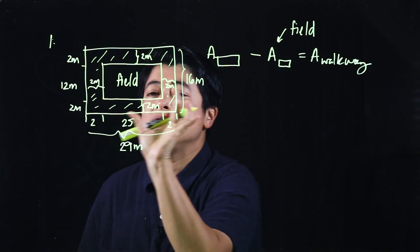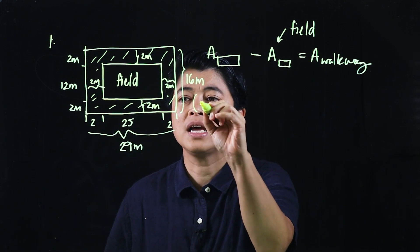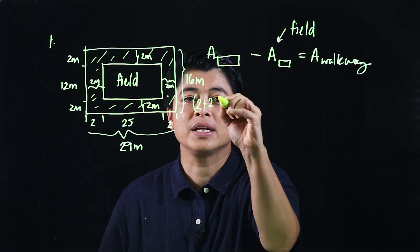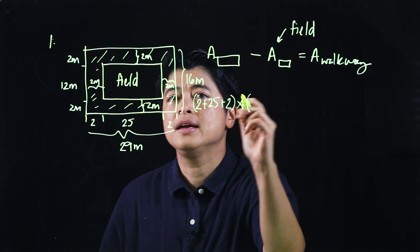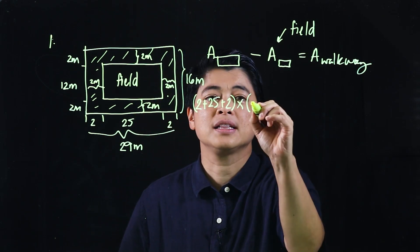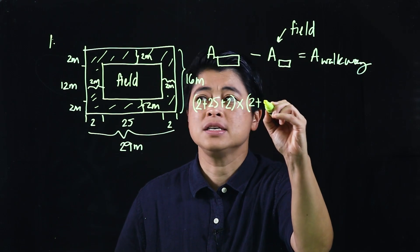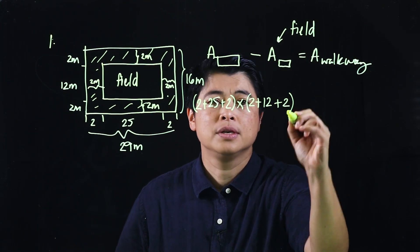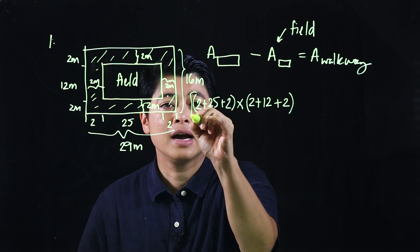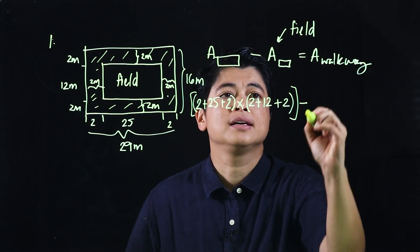The area of this rectangle would technically be the length, which is technically 2 plus 25 plus 2, multiplied by the breadth which is technically 2 plus 12 plus 2.